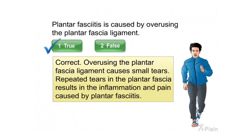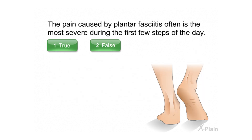Plantar fasciitis is caused by overusing the plantar fascia ligament — select true or false. Correct. Overusing the plantar fascia ligament causes small tears. Repeated tears in the plantar fascia result in the inflammation and pain caused by plantar fasciitis.